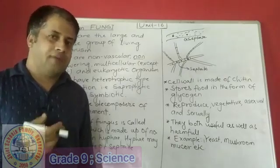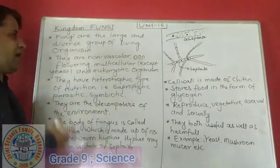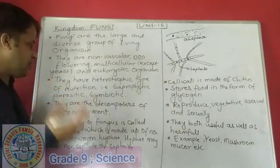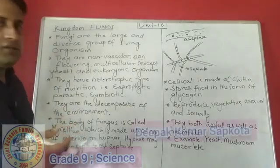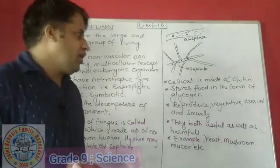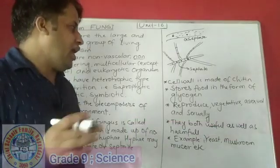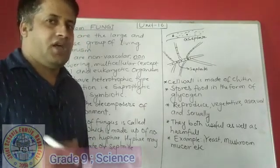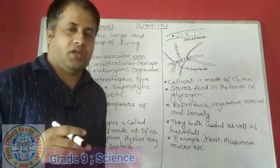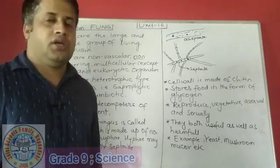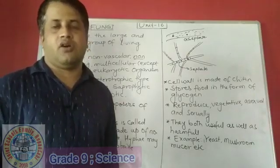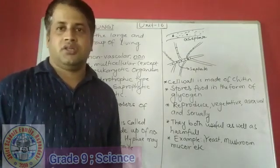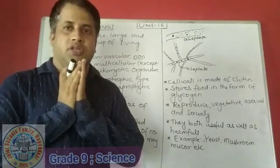Today we discussed many things about fungi. Fungi are large in number, non-vascular, multicellular, eukaryotic organisms. They are heterotrophic — they cannot prepare their own food. They act as decomposers. Their body consists of mycelium or hyphae, and their cell wall is made of chitin. They store food in the form of glycogen, reproduce by vegetative, asexual, and sexual methods, and are both useful and harmful to living organisms. We will study more about classification in the next class. Thank you all — stay home, stay safe.